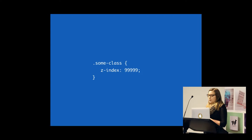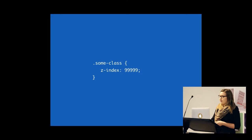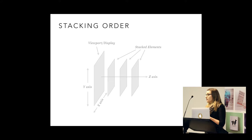Basically what the Z-Index does is it sets the property of the stacking order. Any element with the highest stacking order will be on top and lower stacking will follow through that. In terms of the stacking order, we have three axes to work with: we've got our Z-axis, our Y, and our X. Z is obviously what the Z-Index is changing — you're moving elements within that space.